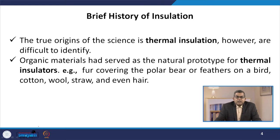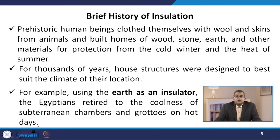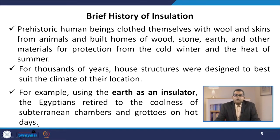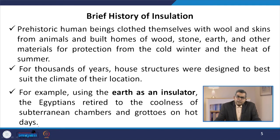Previously, organic materials served as natural prototypes for thermal insulation — like fur covering the polar bear, feathers on a bird, cotton wool, straw, and even hair. Prehistoric human beings clothed themselves with wool and skin from animals and built homes of wood, stone, earth, and other materials for protection from cold winters and the heat of summer. For thousands of years, house structures were designed best suited to the climate of their respective location.